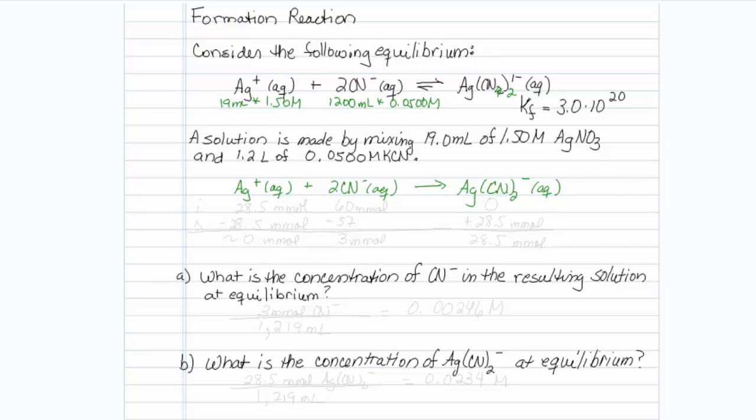Now, for my amounts, I have 19 times 1.5, so that is initially 28.5 millimoles. I have 1200 times 0.05, and that will give me 60 mL right here. And finally, I have nothing of my starting material.